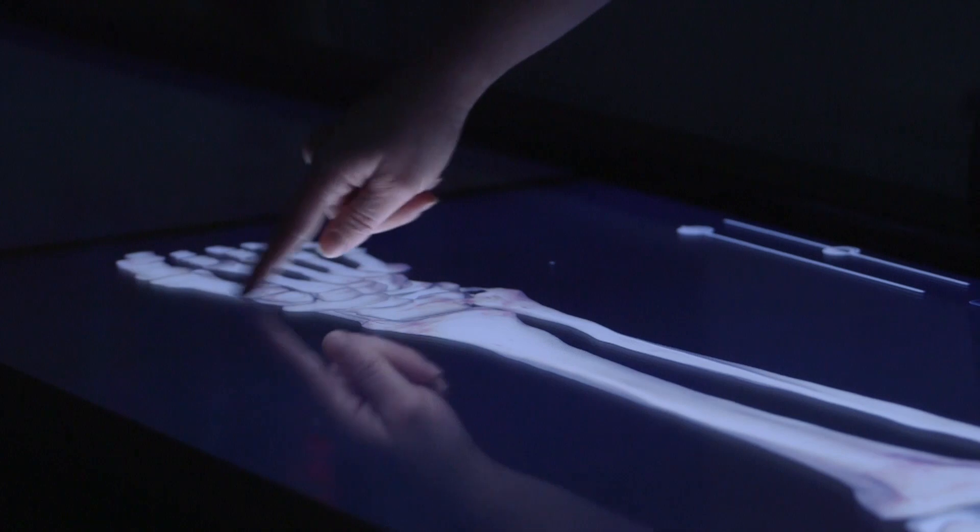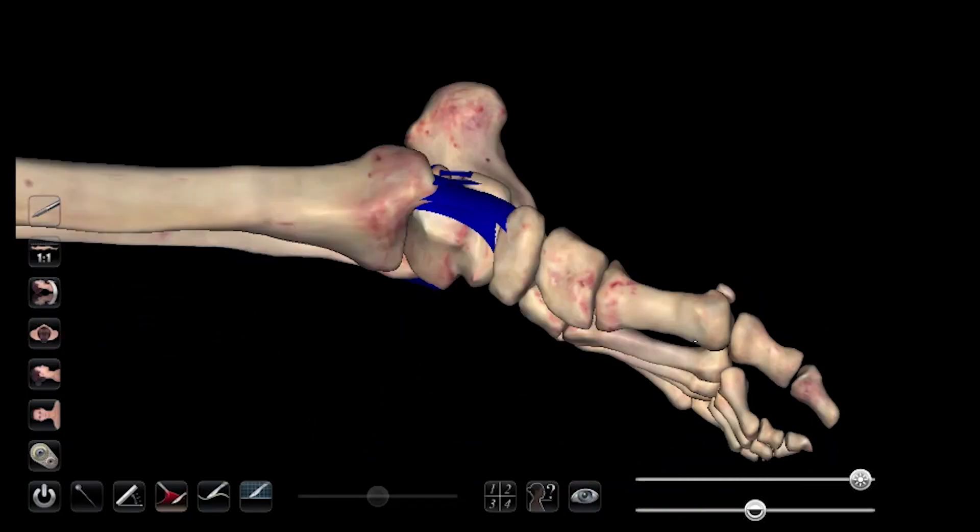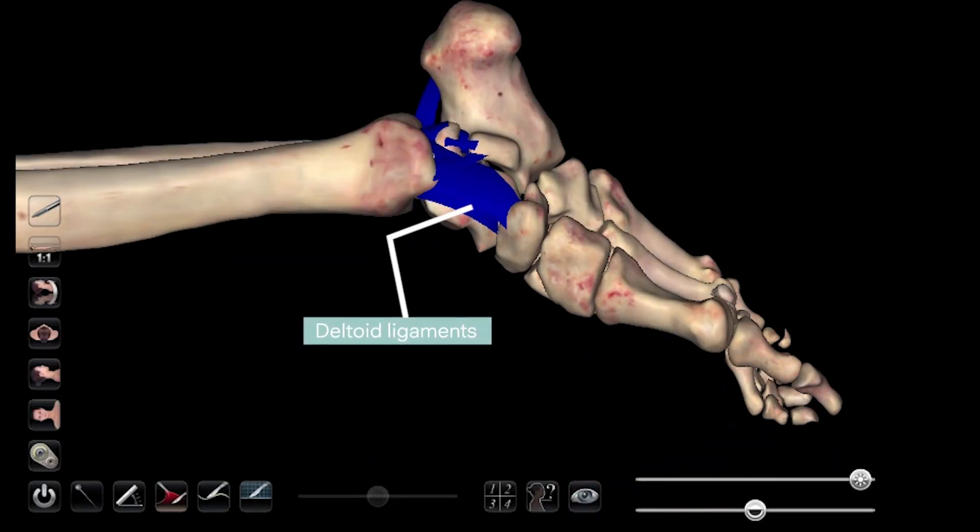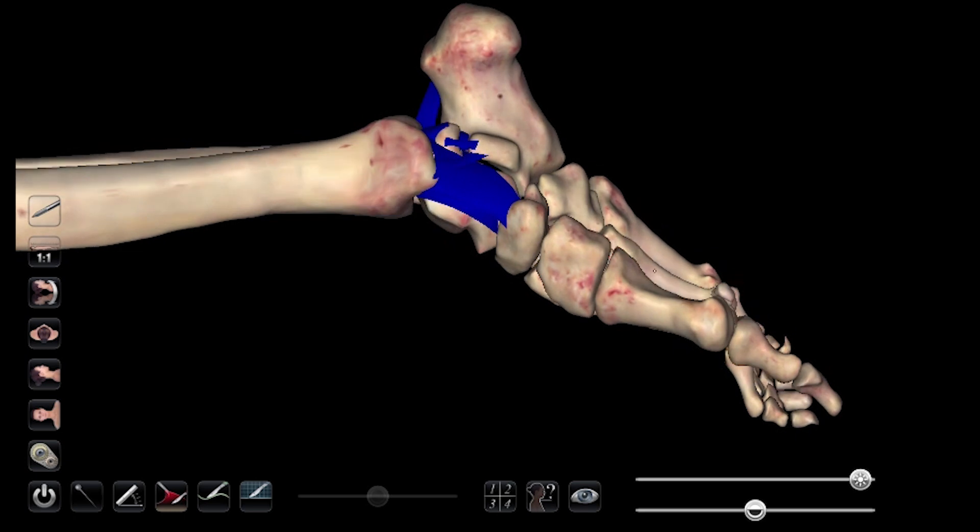So I'm just going to spin this round and show you that medial aspect. So here we can see the deltoid ligaments of the medial aspect of the foot, so the inside of that ankle. And you can see they're a lovely fan shape and they're really nice and strong.